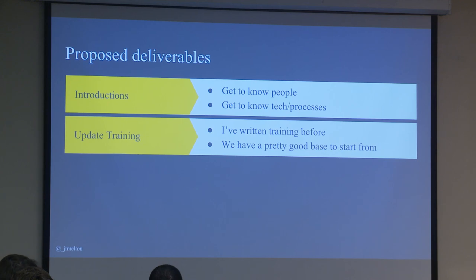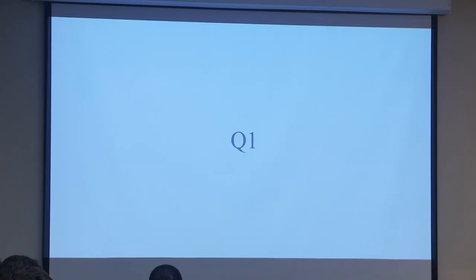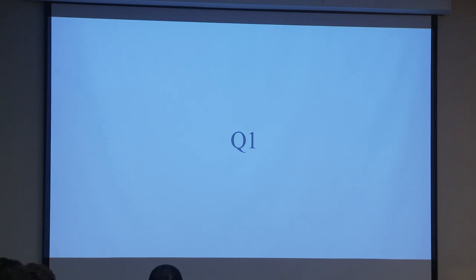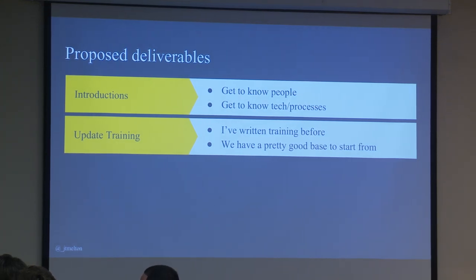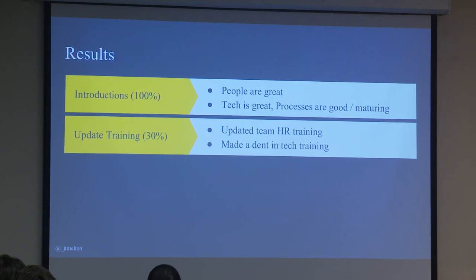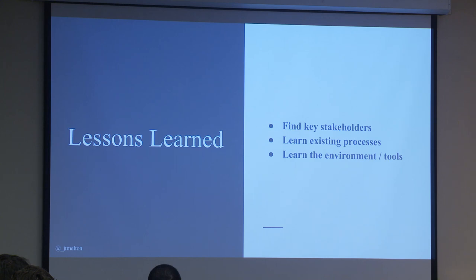The cadence here: we're going to have eight of these quarters. I won't touch on every specific thing — if you have something I skip and want me to talk about, throw your hand up. We'll go through eight quarters of what I was trying to do, what I got done, and what I learned. At the beginning, Q1, I was just trying to get to know people. I came in the middle of a quarter and wanted to do some onboarding training.